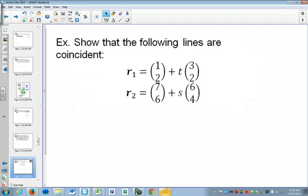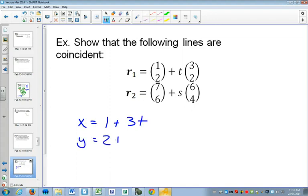So here's our example. X equals 1 plus 3t, and Y is equal to 2 plus 2t, and X is equal to 7 plus 6s, and Y is equal to 6 plus 4s.